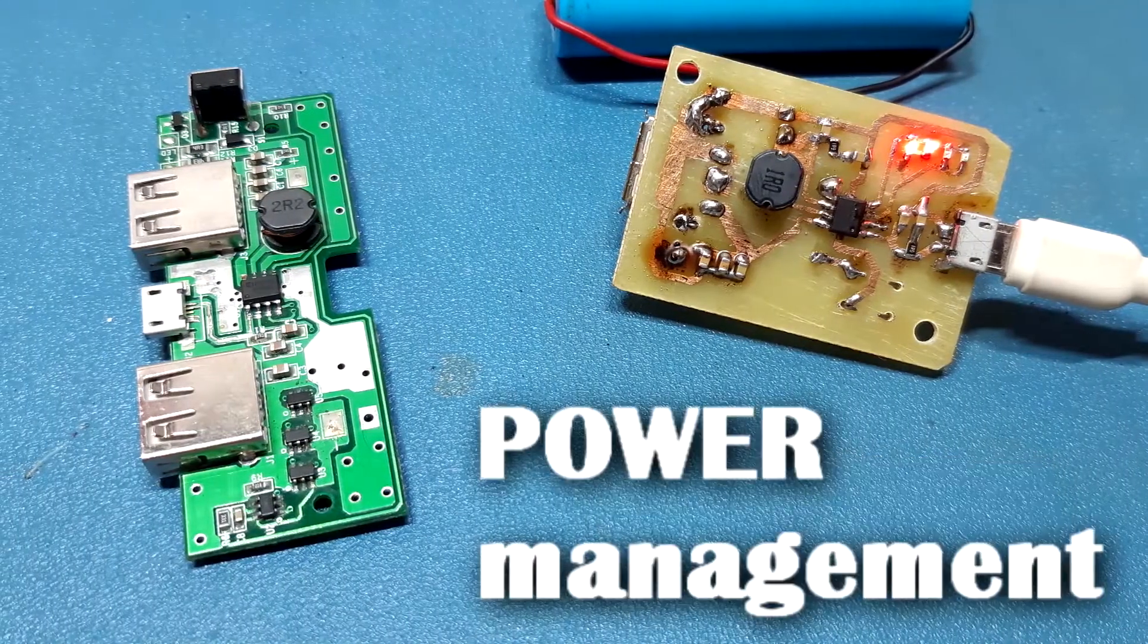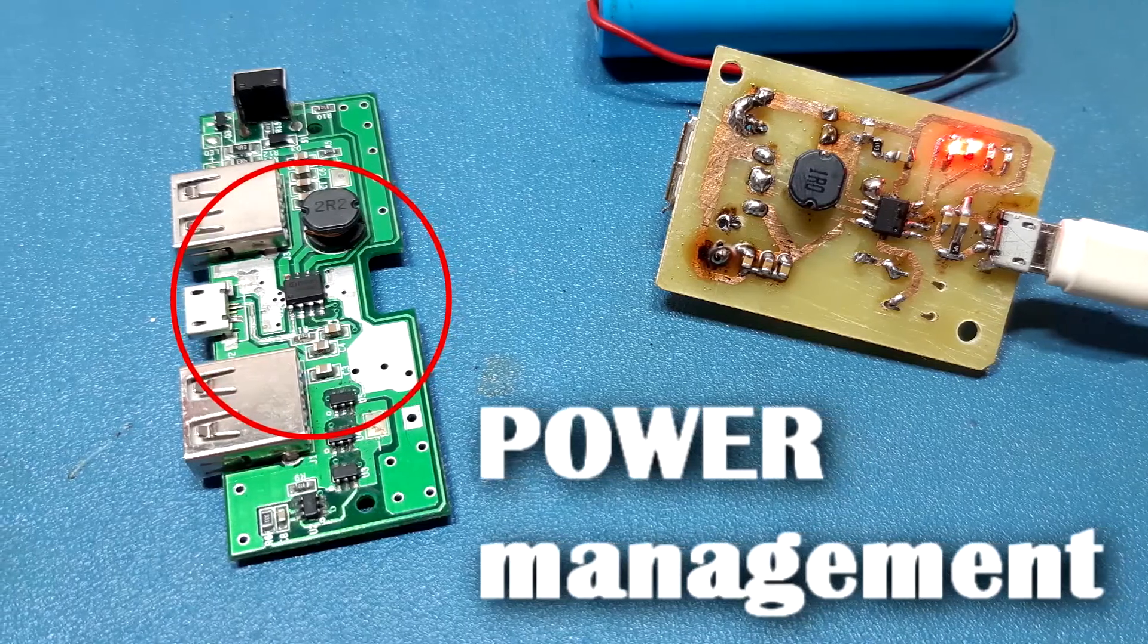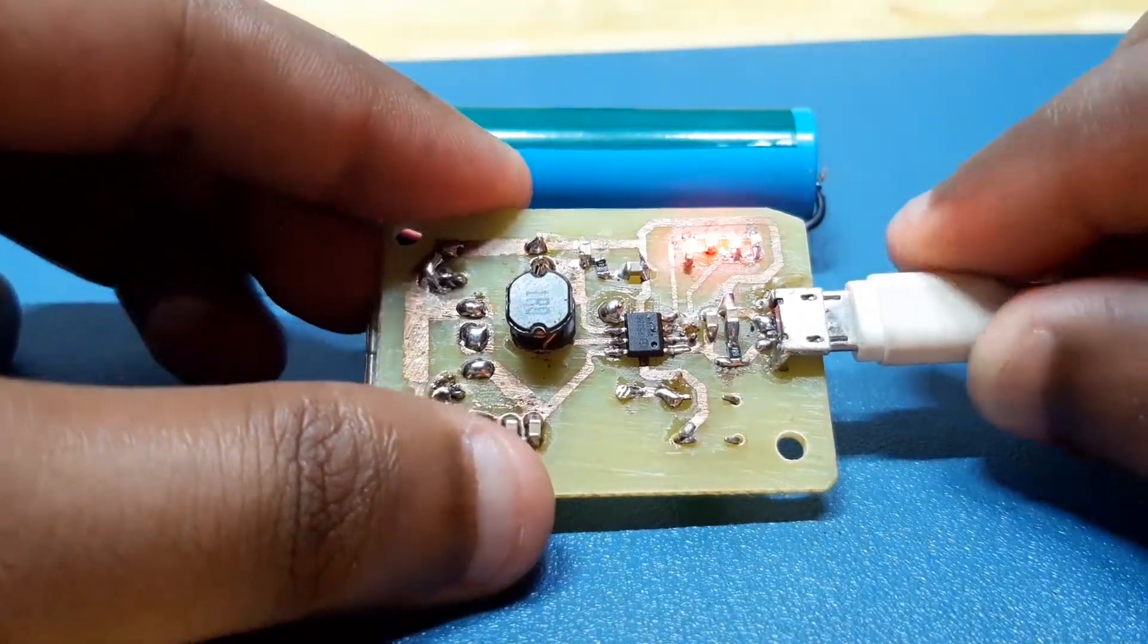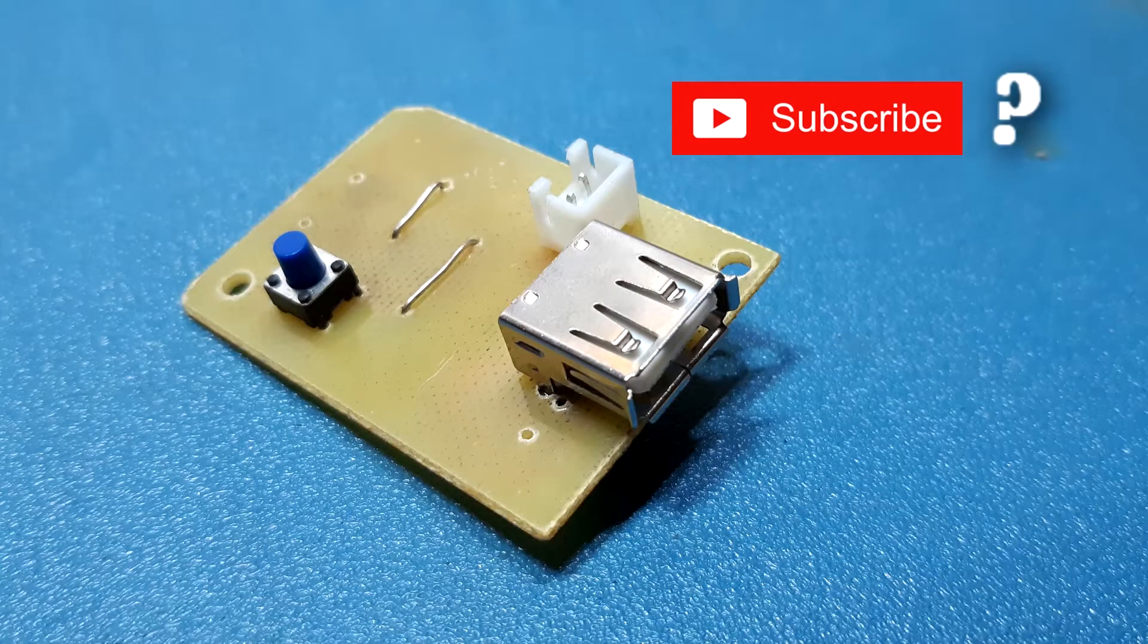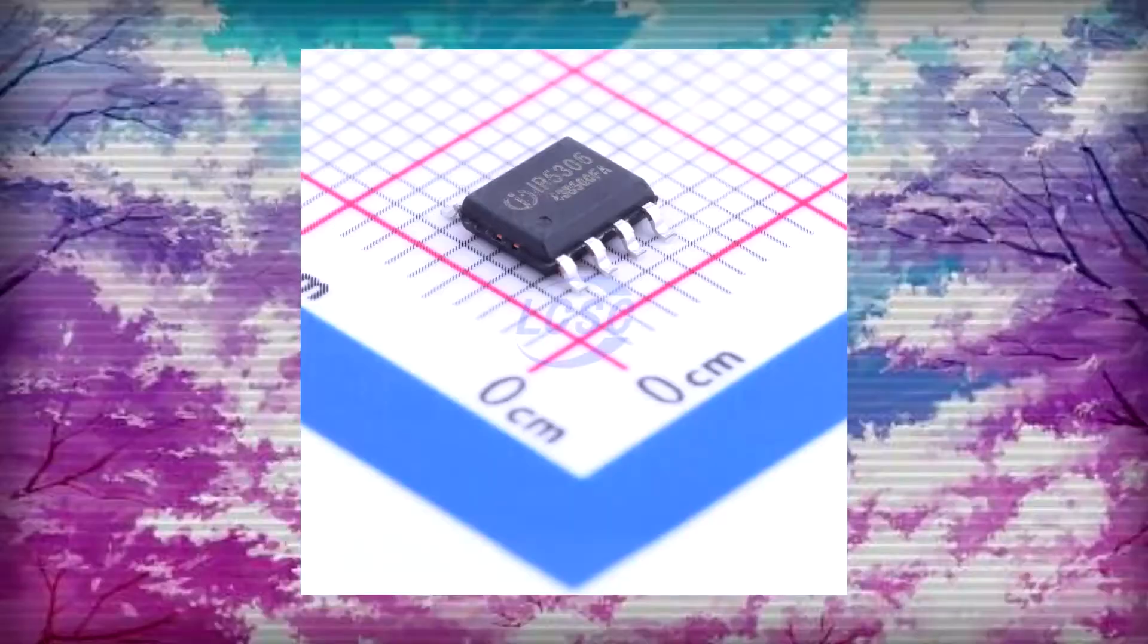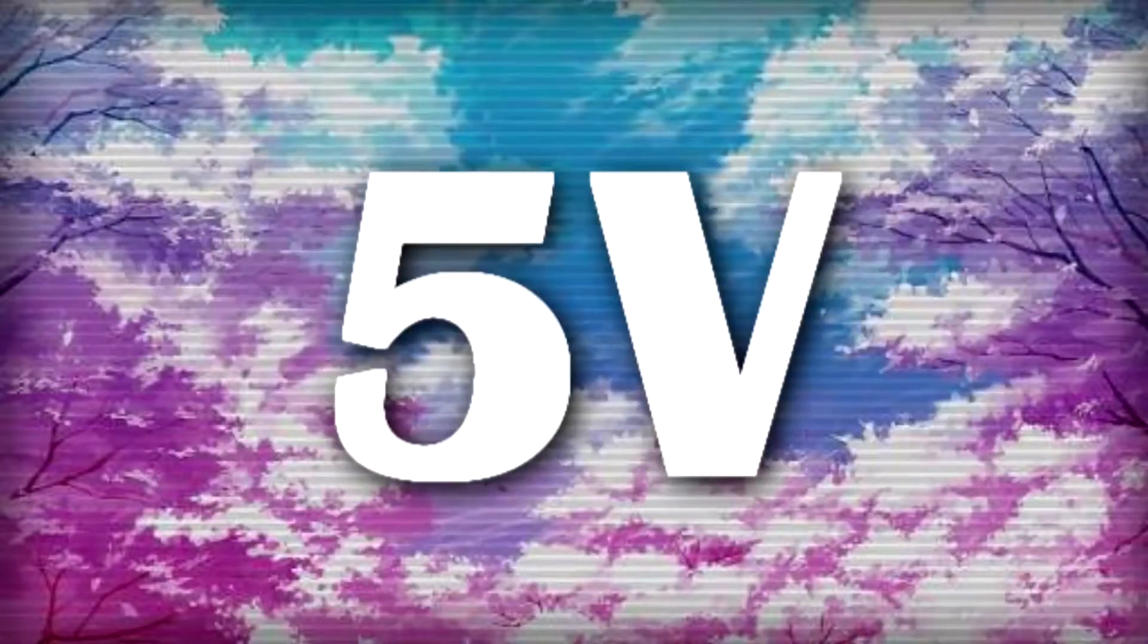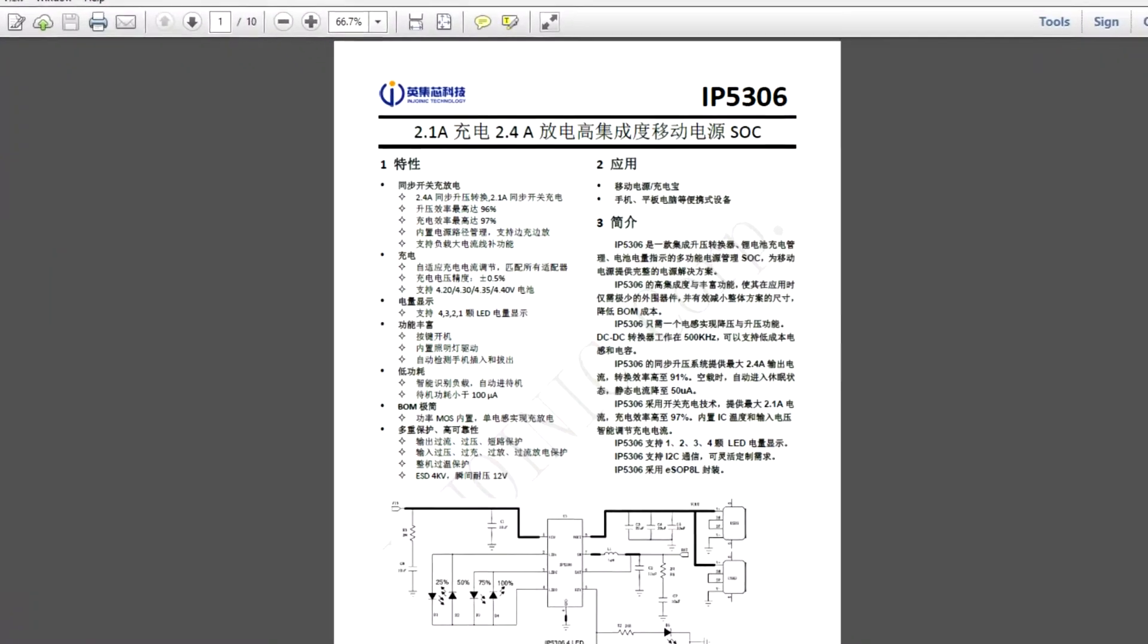IP5306 is a power management IC which is designed to use in a proper power bank circuit. It has four fuel gauge LEDs which display the battery charge percentage and a button for turning on or off the circuit. This IC can boost 3.7 volts to 5 volts 2 ampere, which is ideal for mobile charging applications. Read its datasheet for more info.